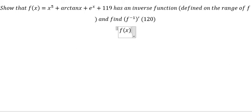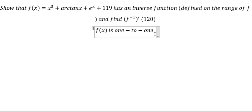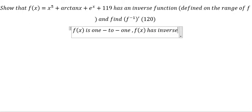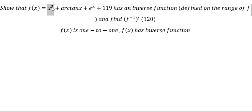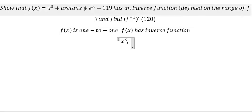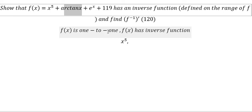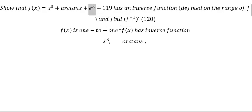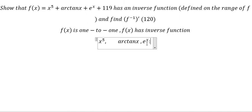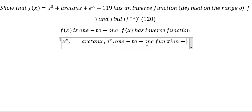We know that if the function is 1-to-1, then this function has an inverse function. So we look carefully at this one. We know that x to the power of 5 is 1-to-1. This one is also a 1-to-1 function, and this one is also a 1-to-1 function. So because everything here is a 1-to-1 function, we combine them together — that is also 1-to-1.